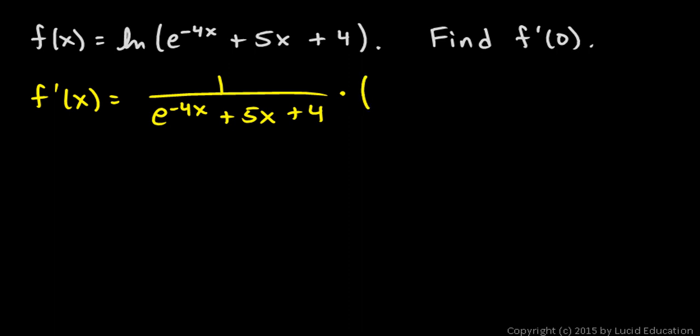When we do that, we get the derivative of e to the negative 4x, which is e to the negative 4x times negative 4 by the chain rule again, plus the derivative of 5x, which is simply 5.